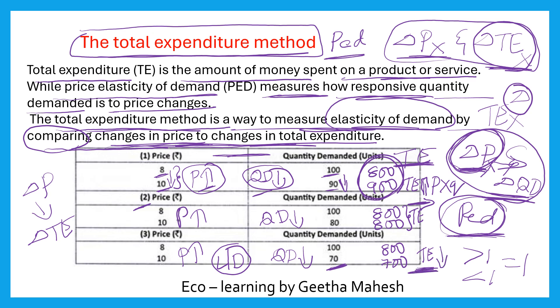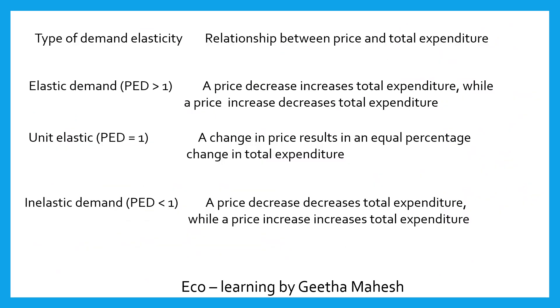By studying the relationship between total expenditure and price, we can understand what type of price elasticity of demand exists. With the help of the expenditure method, we can identify three types of elasticity of demand. The first one is where elasticity of demand is greater than one — that is more elastic, or relatively elastic demand.